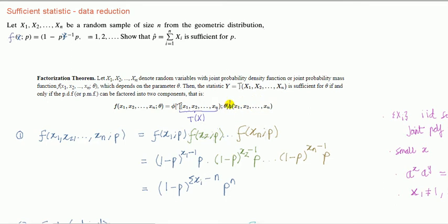parameter, which is going to be h here, times a function which depends on the parameter and also the data, but importantly that the data comes through a function of the data, here denoted by t. So let's do it for this